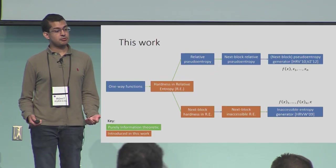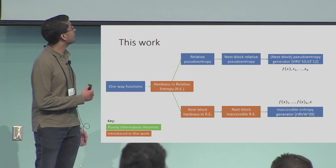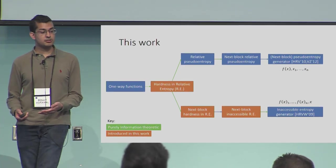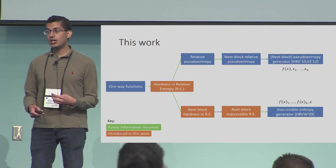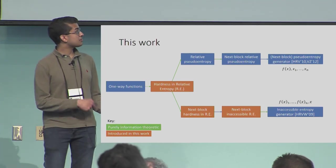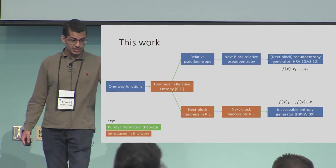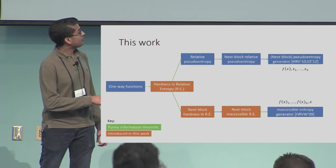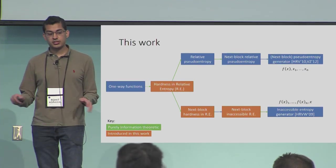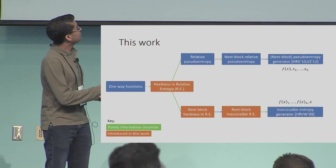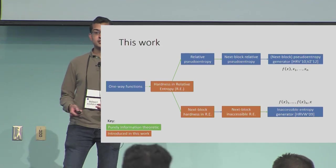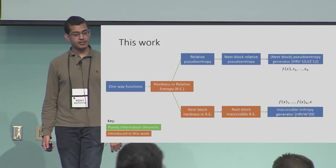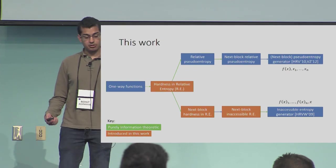In this work, we introduce a few new notions — most importantly, hardness in relative entropy — which, like relative pseudo-entropy, is a simple information-theoretic notion that is easily found in one-way functions. It allows us both to recover relative pseudo-entropy in the case of pseudorandom generators, and also to make the proof of inaccessible entropy generators more modular, simpler, slightly tighter, doing most of the work with information-theoretic manipulations and isolating the computational aspect to one step. We'll see that many of the steps on the top and bottom mirror each other.